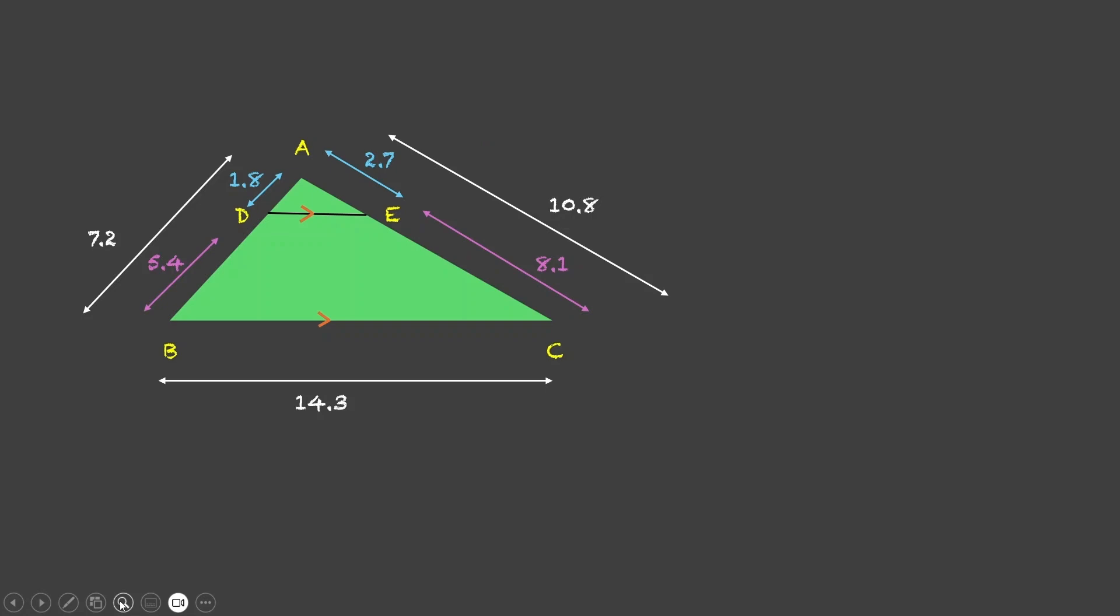Now if we find out the ratio of AD to DB, that's 1.8 divided by 5.4 which is 18 by 54, that is 1 by 3. Let us also find out the ratio of AE to EC. This is 2.7 divided by 8.1 which is again 1 by 3. So, ratio of AD to DB is equal to ratio of AE to EC. That's quite a coincidence, right?